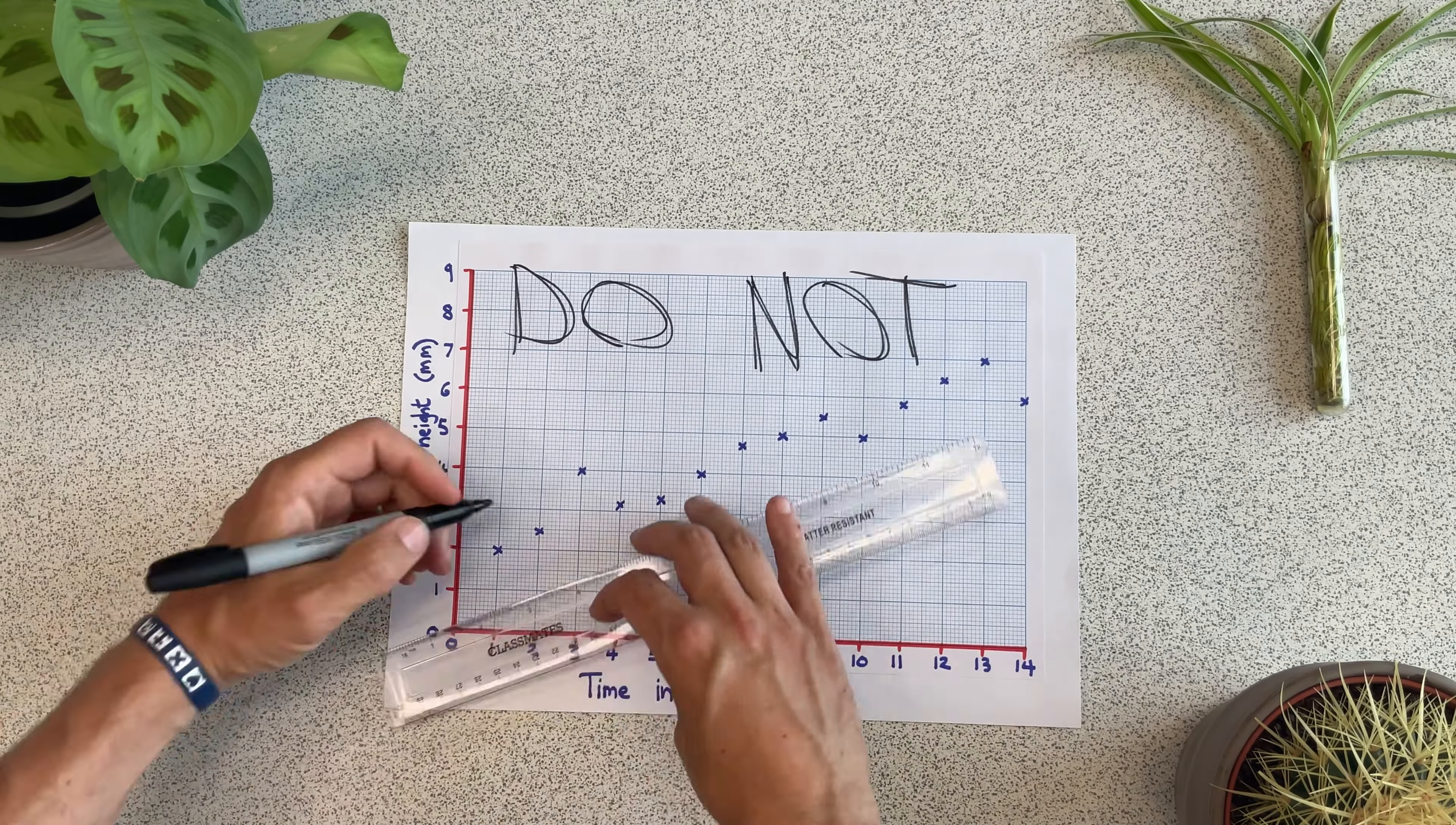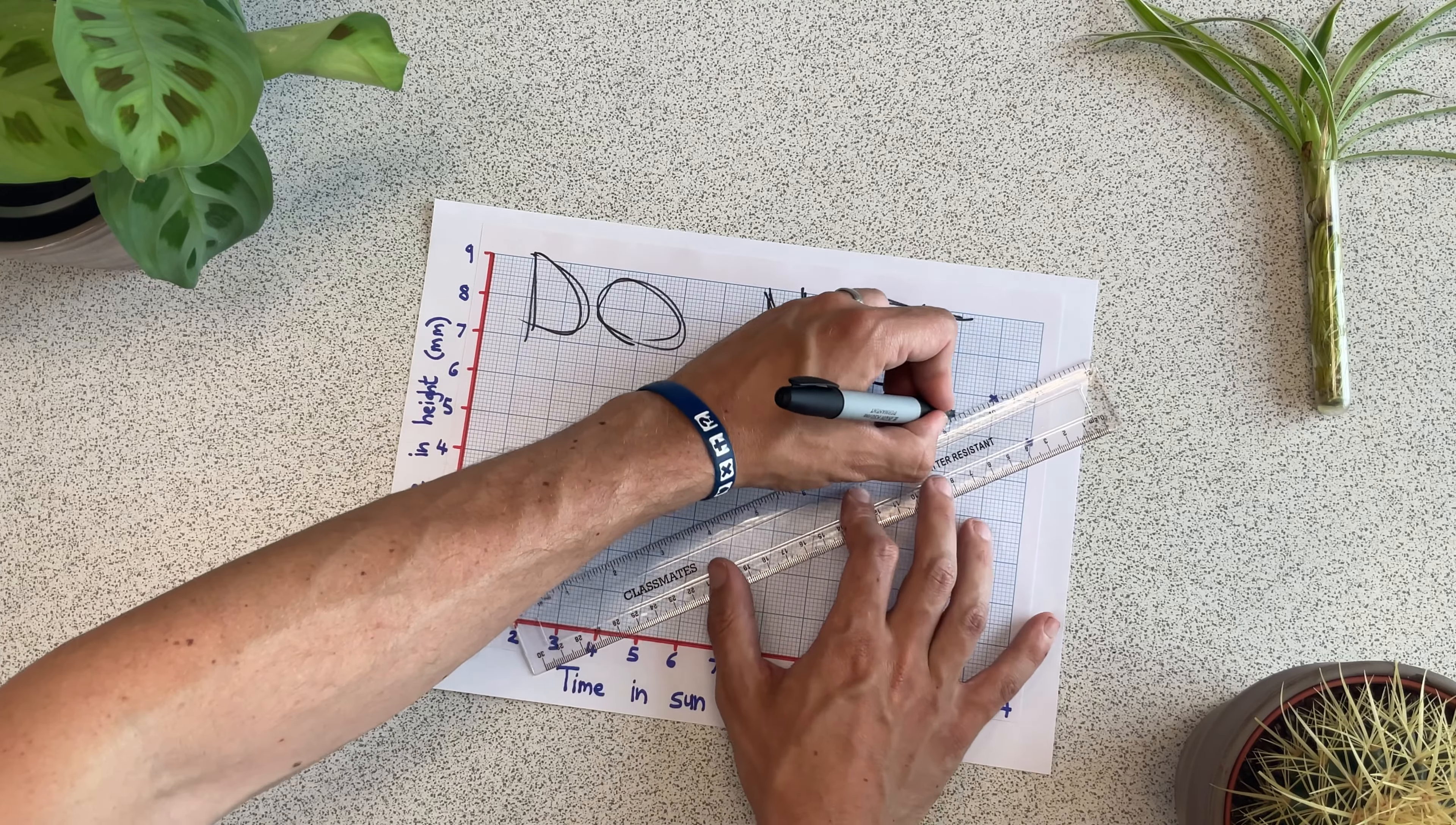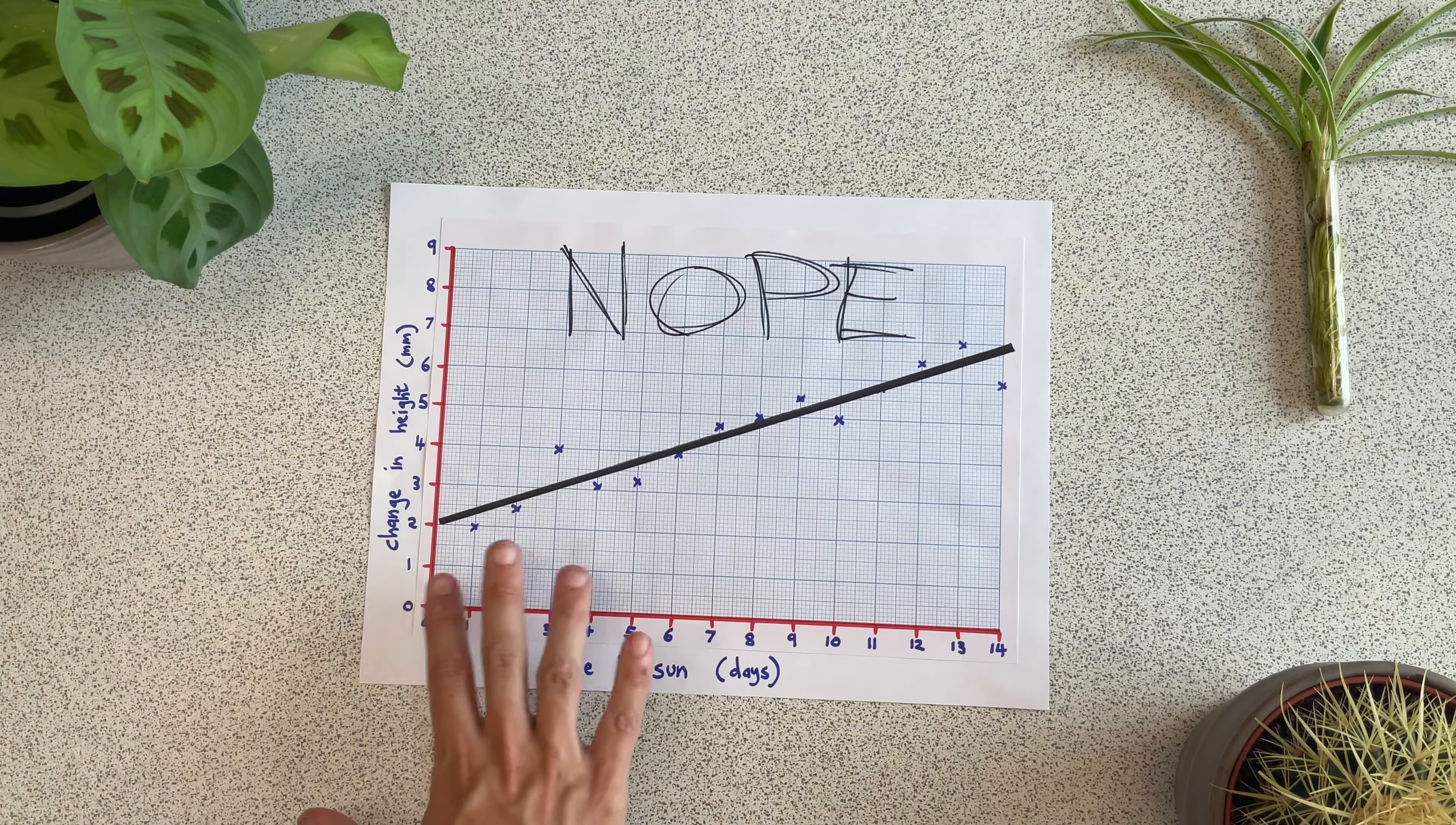Another really common mistake is to do dot to dot. Now, sometimes this is the right thing to do, but your teacher or the question will tell you when that is. Most of the time, dot to dot is wrong. A thick line is going to cause issues when you try and use your graph. Draw a nice thin line with a sharp pencil.